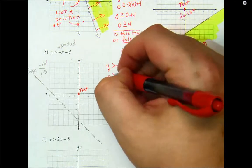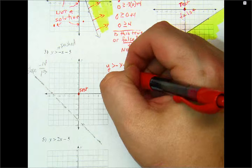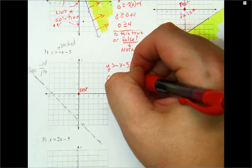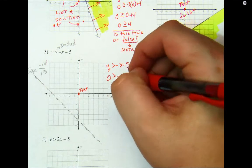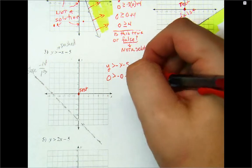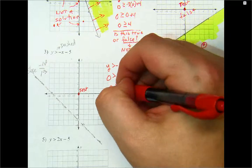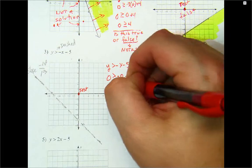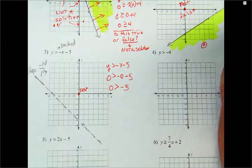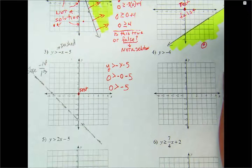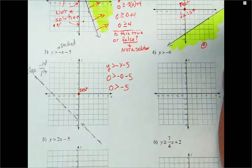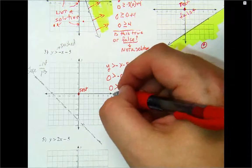Zero is greater than the opposite of zero minus five. So what's the opposite of zero minus five? It's just basically zero minus five. So is this true or false?